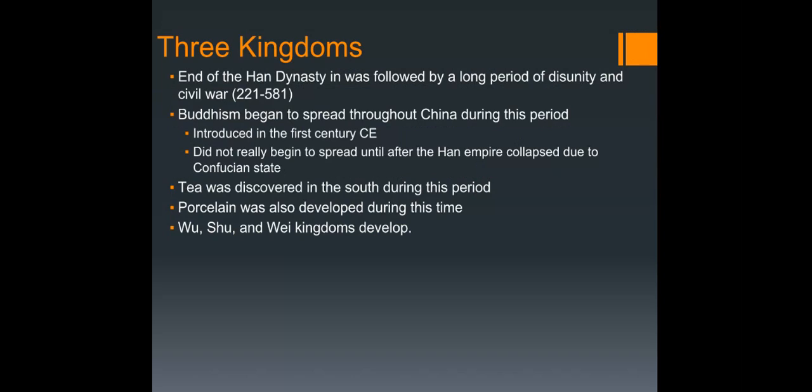First we're going to talk about the Three Kingdoms. Buddhism was introduced to China during the Han dynasty before 100 CE — the exact date is unknown. The Han dynasty collapsed in 220 CE. At first the Chinese converted to Buddhism because they believed that the Buddha performed miracles, but there was a major obstacle in the spread of Buddhism: its insistence on celibacy for monks and nuns.